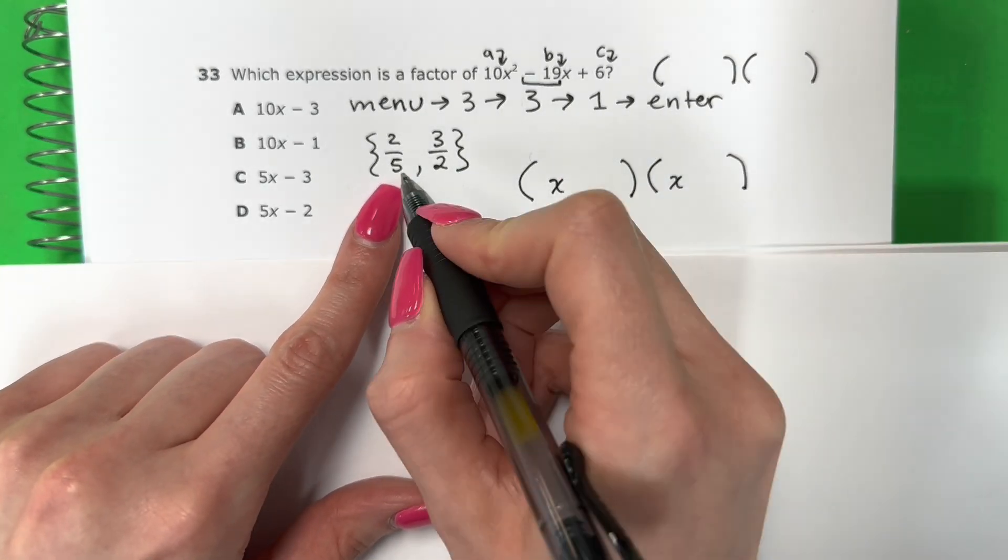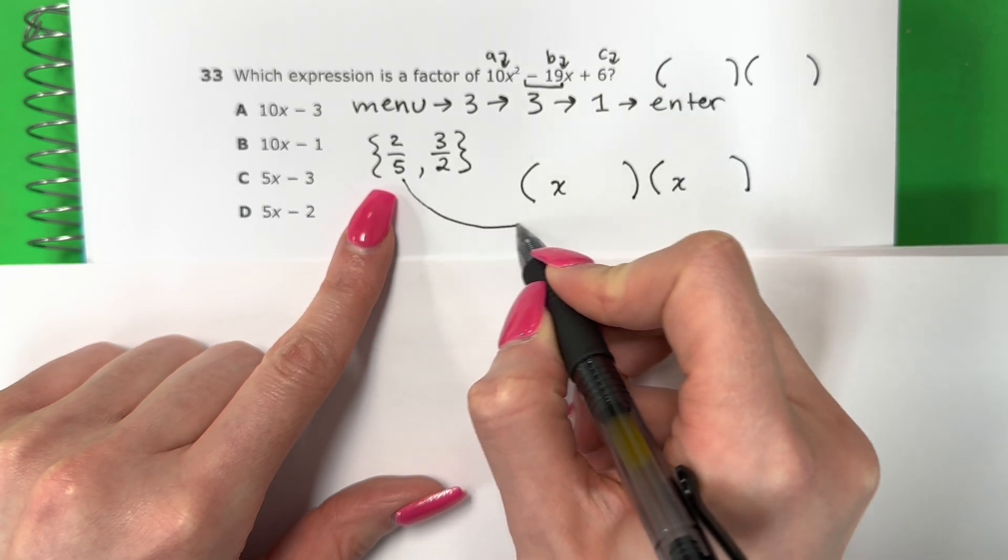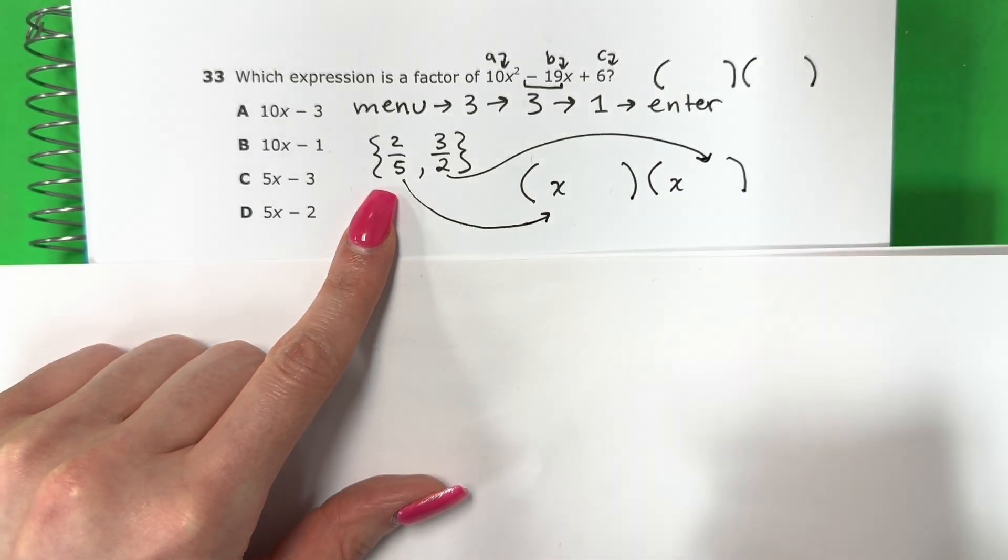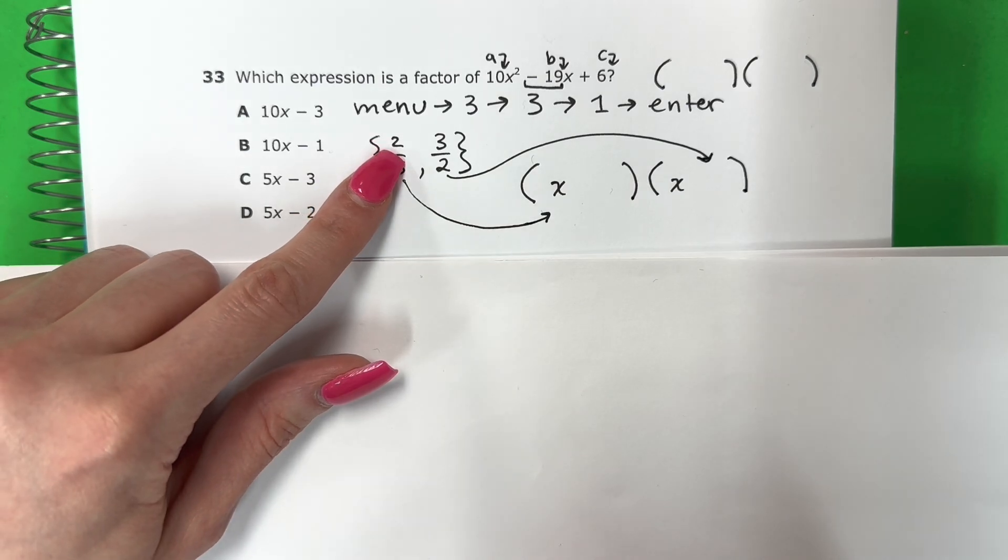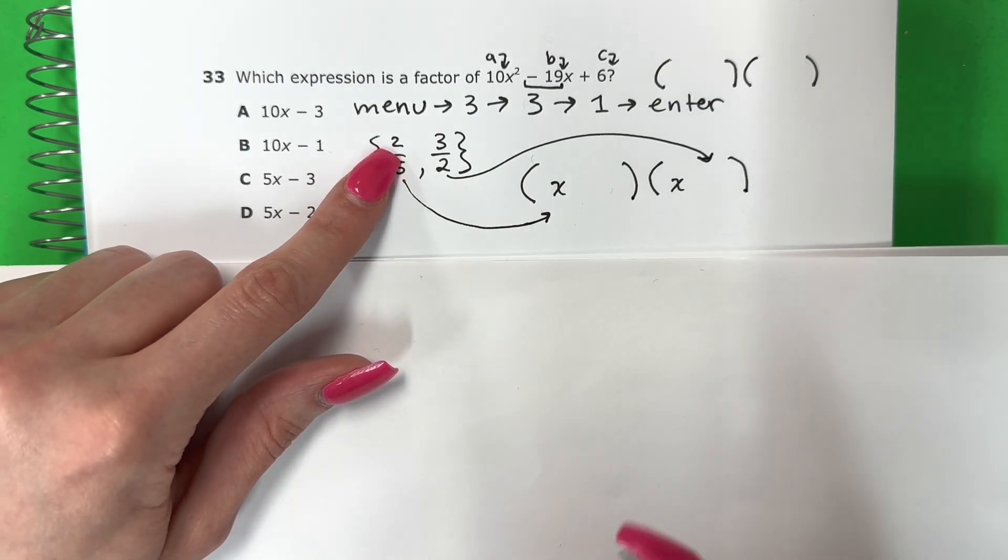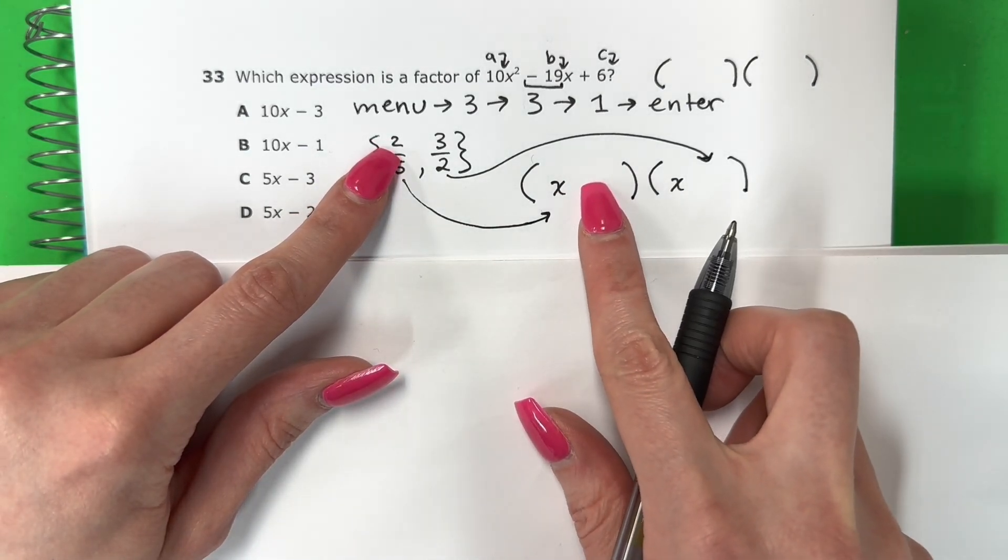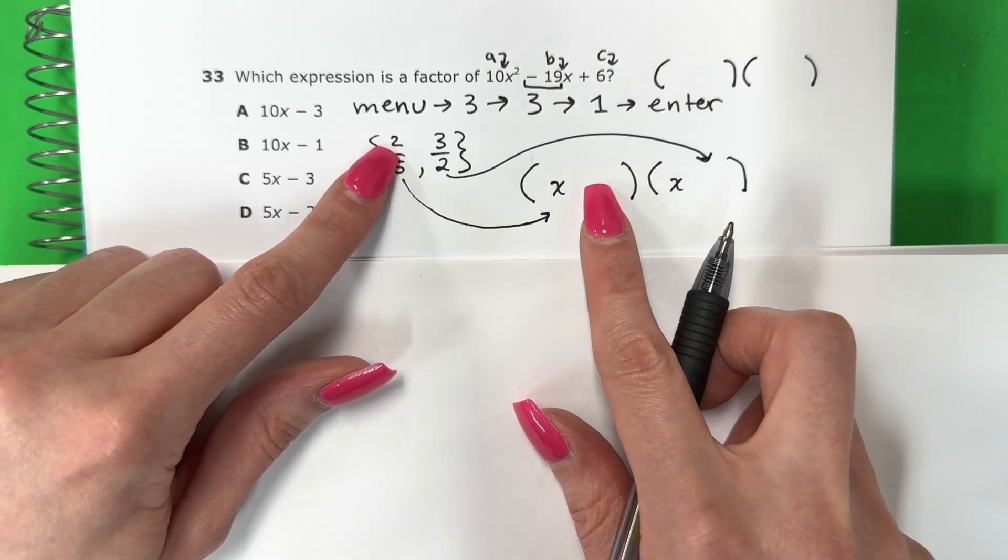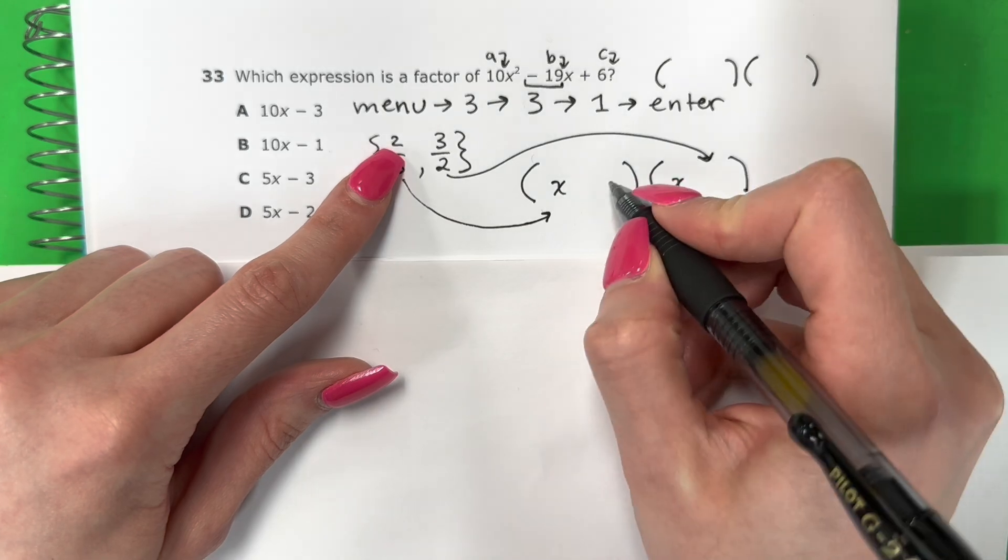The first number, el primer número, this will be for here. And then the second number, el segundo número, will be here. Okay, so the number that is up right over here, you're going to put it after. Vamos a poner después. El número que está arriba, vamos a poner después. So the number up, you put it here. So this is two.